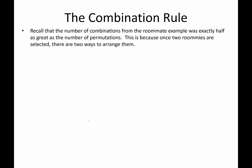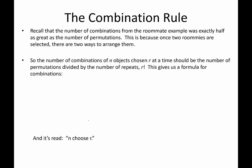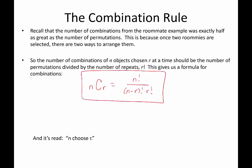Let's talk about the combination rule. The number of combinations from the roommate example was exactly half, because once two roommates are selected there are only two ways to arrange them — Rachel-Eve or Eve-Rachel — so we divide out that repetition of two. The number of combinations of n objects chosen r at a time equals the number of permutations divided by the number of repeats. This gives us the formula: n choose r equals n factorial divided by (n minus r) factorial times r factorial.